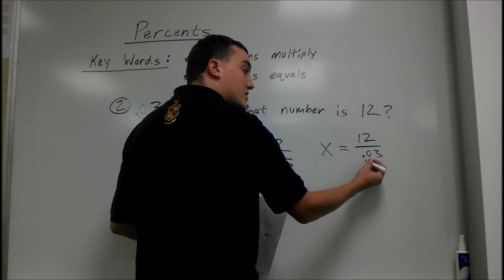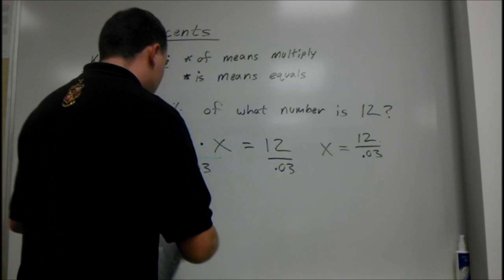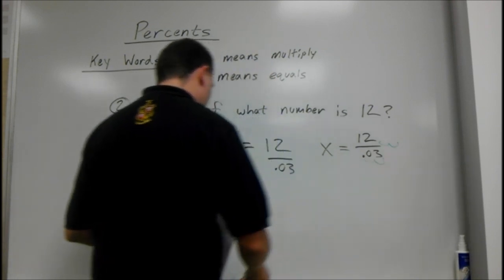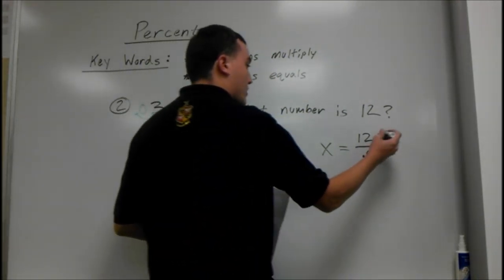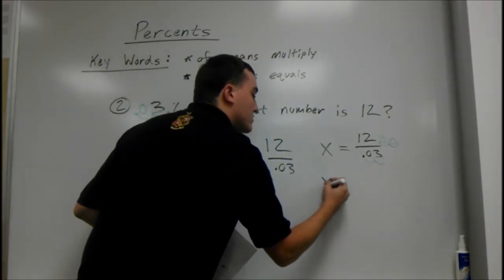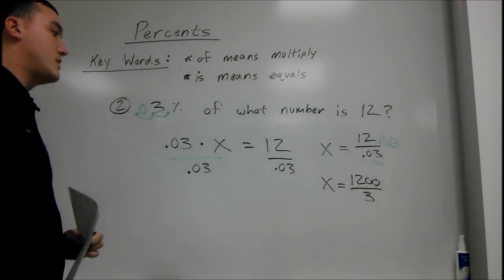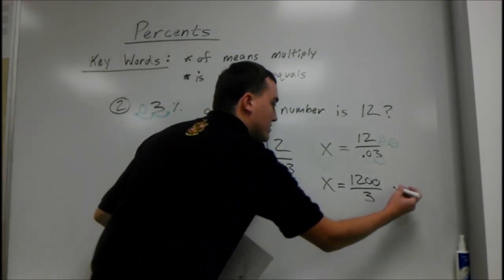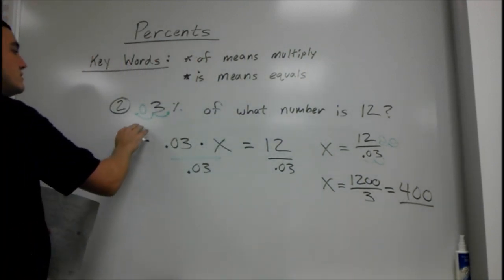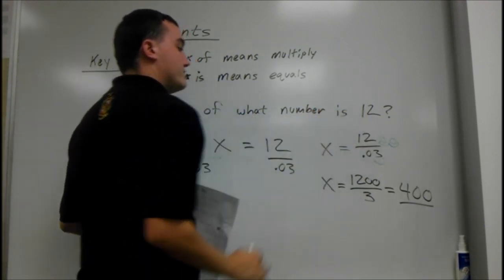Without a calculator, we can do this by moving the decimal place two places so we just have regular numbers. Moving this over two places gives us 1200 divided by 3. So x equals 1200 divided by 3, and that happens to be 400. So x is 400. If we read it with the answer in there: 3% of 400 is 12.